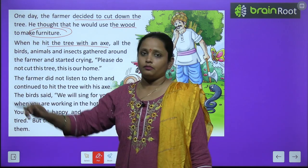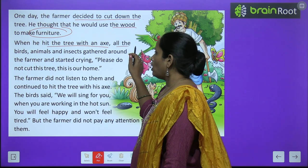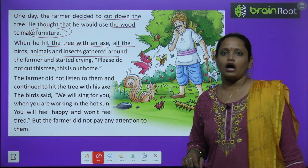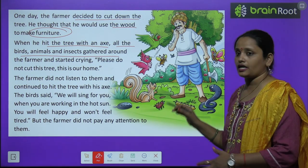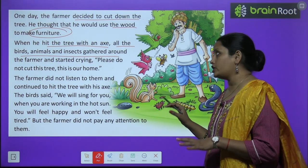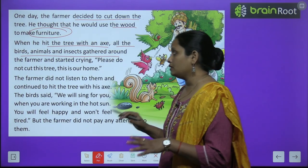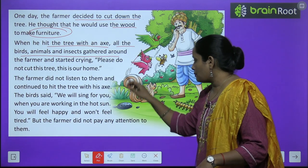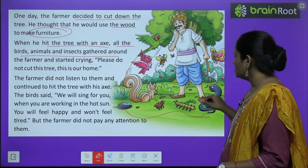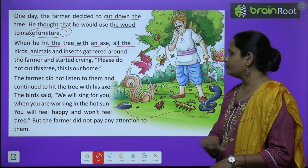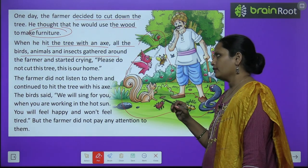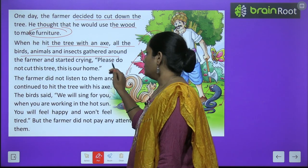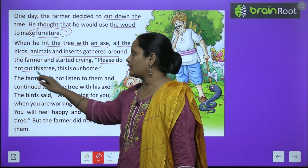When he hit the tree with an axe, जैसे उसने कुलहाड़ी मारी पेड़ पे, all the birds, animals and insects gathered around the farmer and started crying. जितने भी birds उस पेड़ पे रहते थे, जितने भी animals रहते थे, जितने भी insects रहते थे, सब आके उस farmer के चारों तरफ खड़े हो गए.